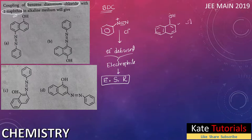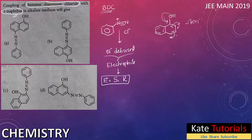If the electrophile attacks the ortho position, steric hindrance occurs. The para position has no steric hindrance and will be richer in electron density because the OH donates lone pairs to that position. So the electrophile attacks the para position. It cannot attack the other benzene ring because it is not electron-rich enough.